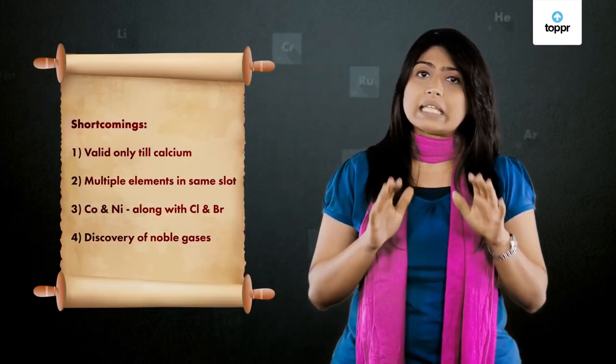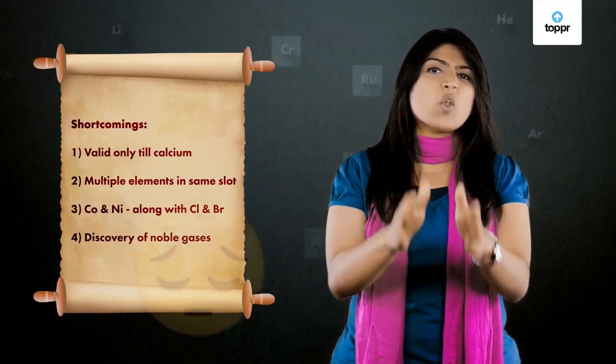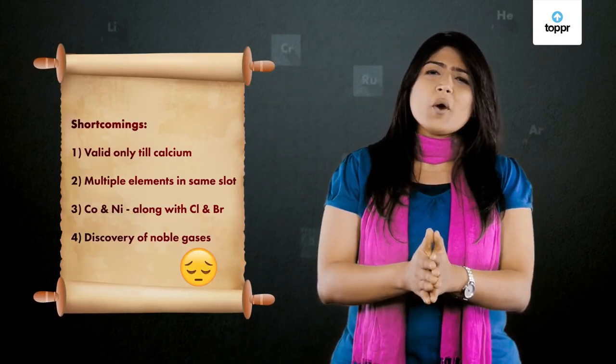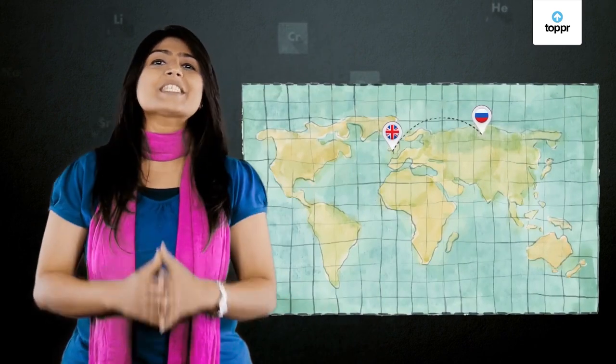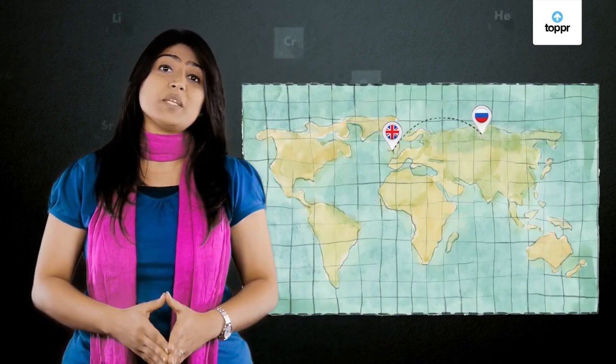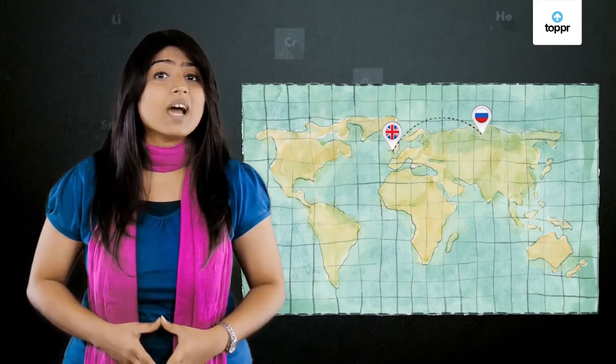Newlands could not justify these shortcomings, and hence the law failed. So did anyone come up with a better way to classify elements — maybe in some other part of the world? This suspense will be revealed in the next video.